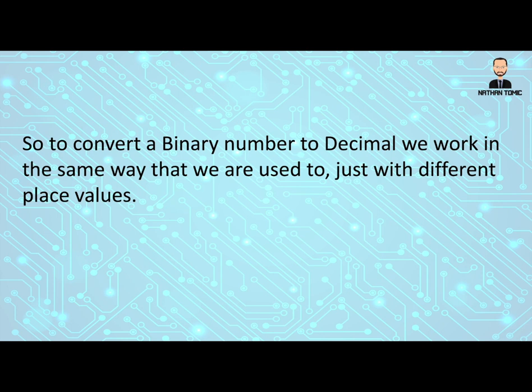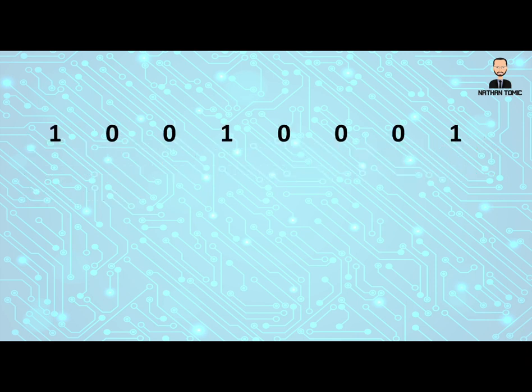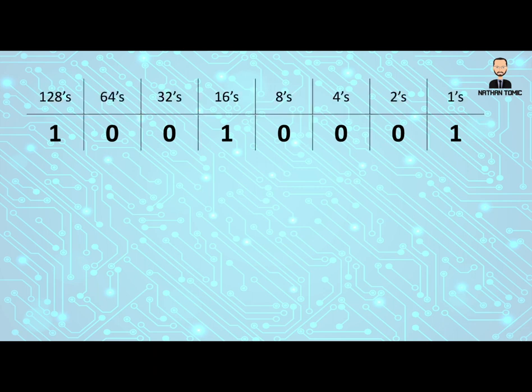So how do we convert a number from binary to decimal? We do that in the same way that we're used to. We just use different place values. So here we have a binary number 10010001.